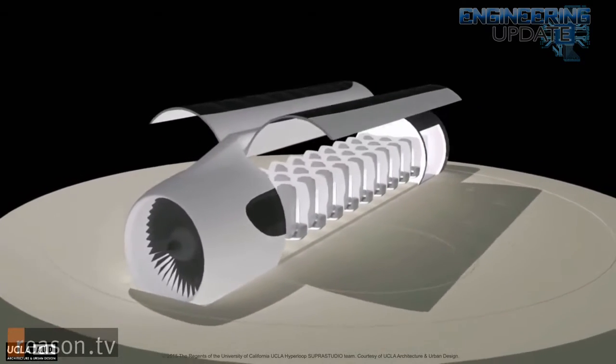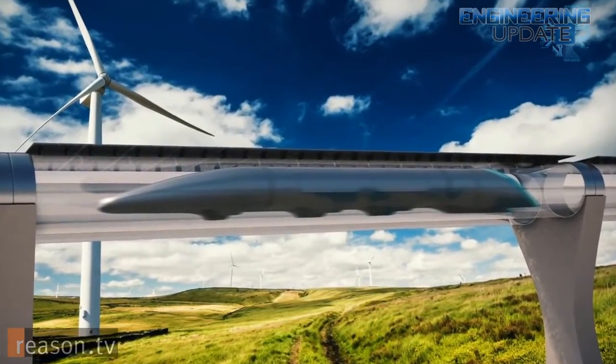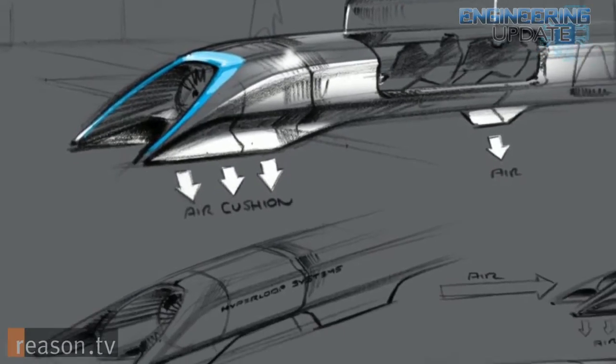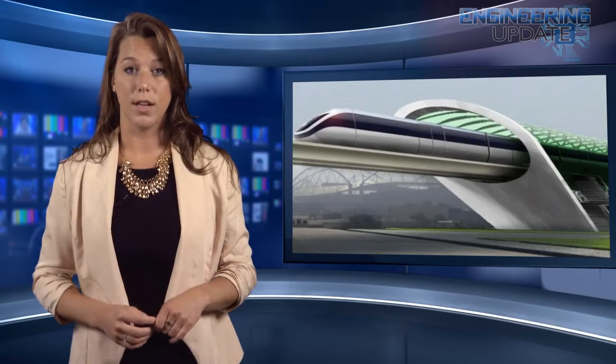Pods with seats for a few passengers would travel through the above-ground tubes, with a distance of 5 miles or so between the other pods. Musk announced plans for the Hyperloop concept in August 2013, and it was estimated to cost about $6 billion dollars.